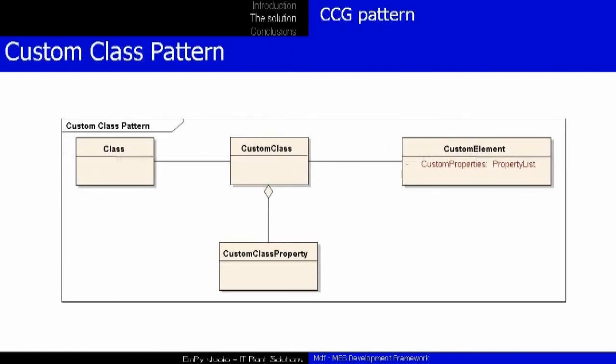Now we can see in more depth the most important tool of the MDF library: the Custom Class Generator. The CCG automatically generates the classes defined by the user developer using the custom class pattern. The equipment model is where you define how the MES is divided as an equipment hierarchy. The equipment is an entity defined by the ISA-95 standard, but the standard defines only the identifier, the description, and the hierarchy of the units of equipment. In real-world manufacturing execution system applications, this is not enough.